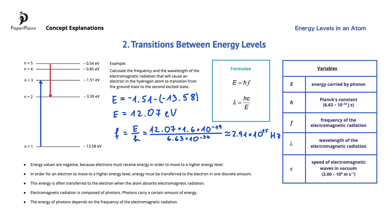To calculate the wavelength, we can either use the second formula or the wave speed equation. Using the wave speed equation, lambda equals c over f. Substituting gives us 3 times 10 to the power of 8, divided by 2.91 times 10 to the power of 15. The result is approximately 1.03 times 10 to the power of negative 7 meters, which we can also express as 103 nanometers.